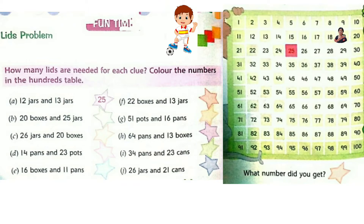Question B: 20 boxes and 25 jars. How many leads will there be? 20 plus 25. In the 1's place: 0 and 5, that is 5. And in the 10's place: 2 plus 2 is 4. So the answer is 45. Colour 45 in the 100's table.